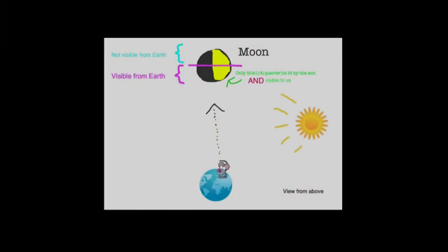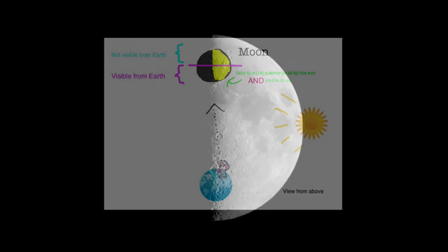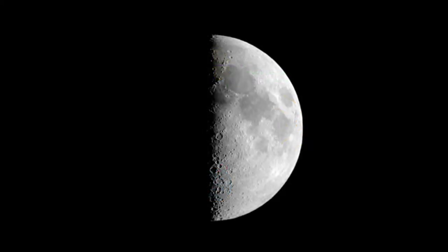The moon is a three-dimensional object, not just a flat figure that appears to be in the sky. When the moon is in this position, we can see that half of it is illuminated, like always, but from Earth we can only see half of the half. The back part of the moon is not visible to us from the Earth, but it is still part of the moon. So when we see a view like this, we only see a quarter of the moon illuminated.